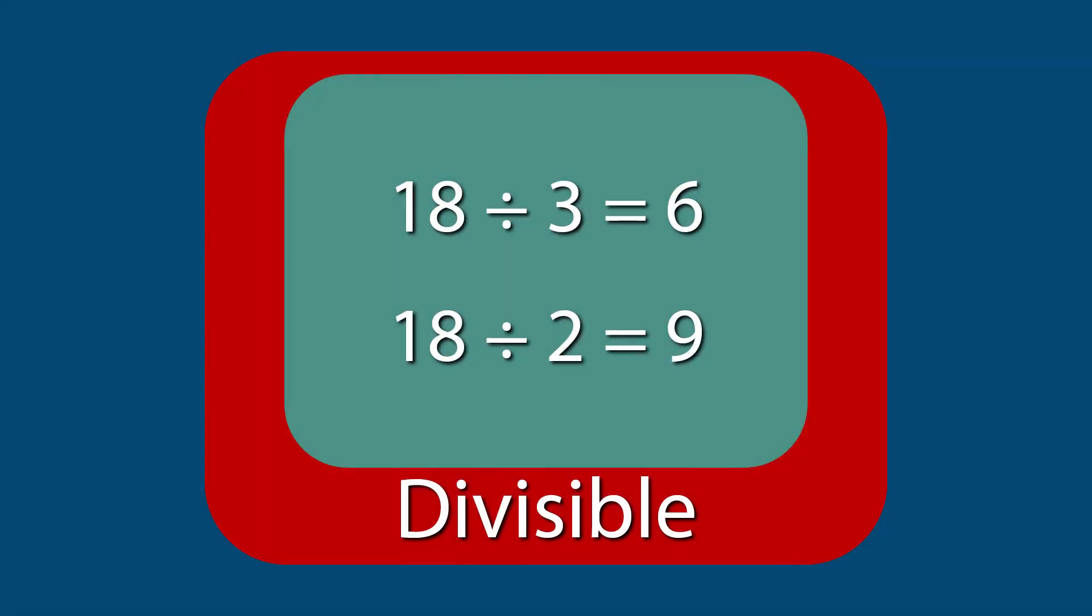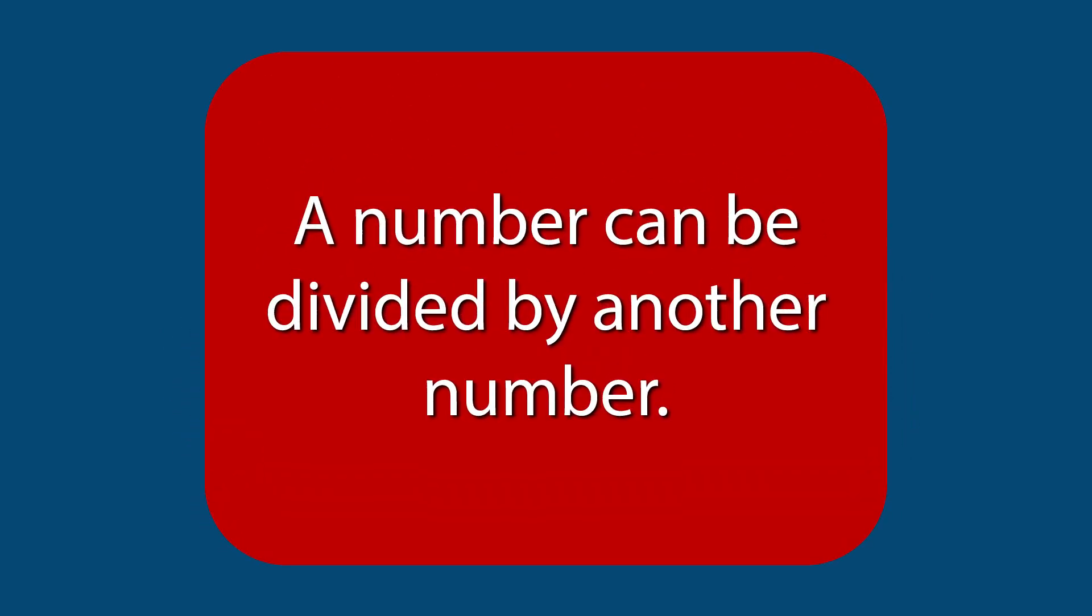This is the word divisible. Divisible means a number can be divided by another number. So, 15 is divisible by 5 because 15 divided by 5 equals 3, but 5 is not divisible by 3.